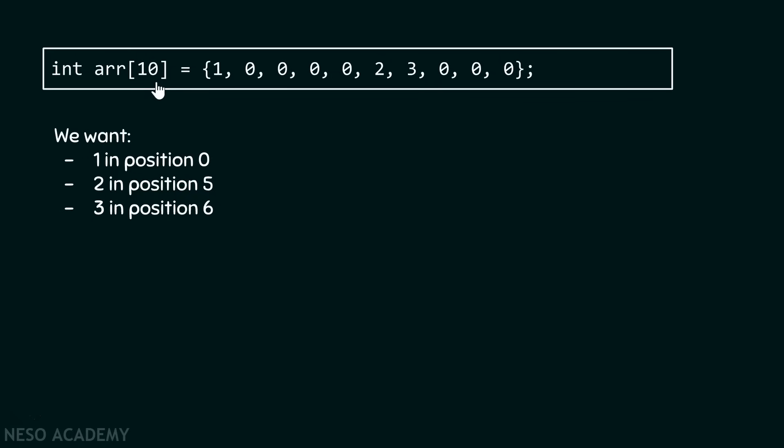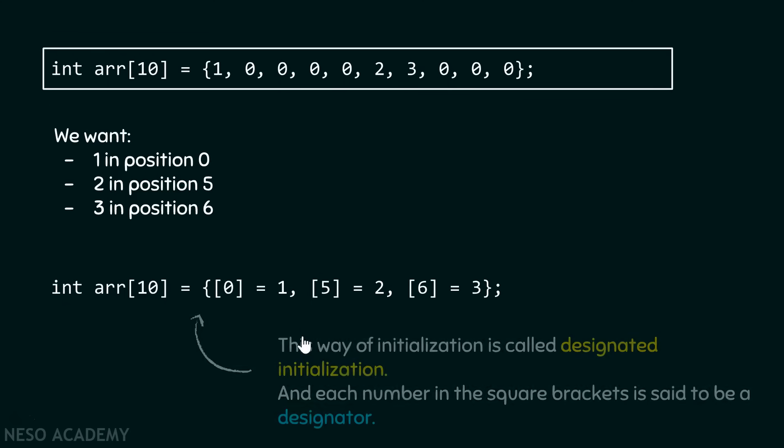To do this, we have to write something like this. This way of initialization is called designated initialization. And each number in the square brackets is said to be a designator. This is nothing but an index. And this is the value you want to store in that particular index.